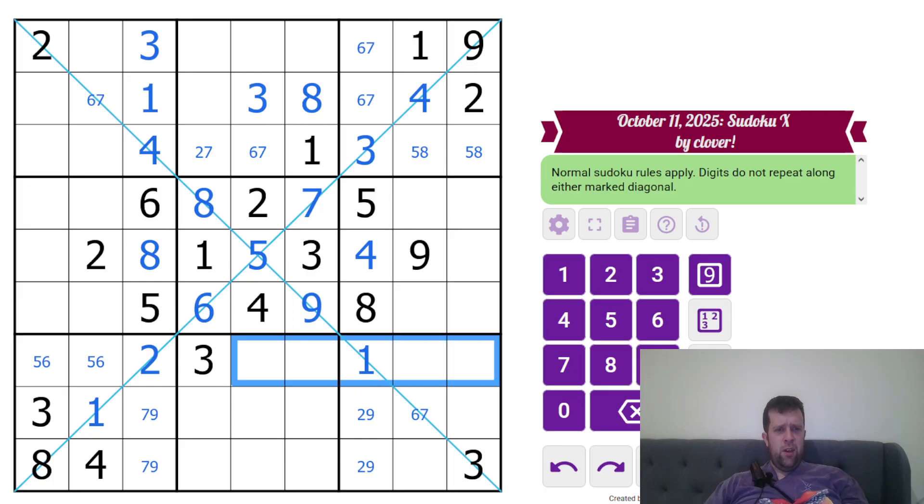Along here, let's try along here. Where does 9 go? Well, we have a 2, 9 pair, ruling it out of those. 9 can't go there from that 9, so that's a 9. 4, 7, and 8. Well, that's a 7, 8, looking at that cell, so that's a 4.